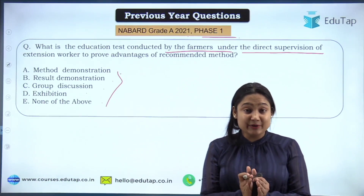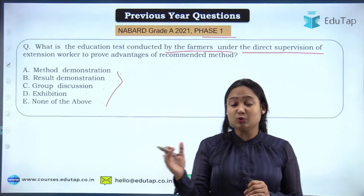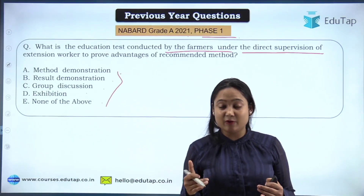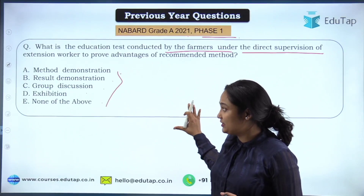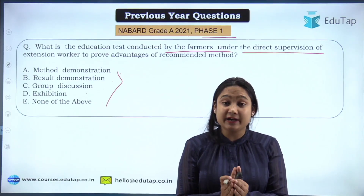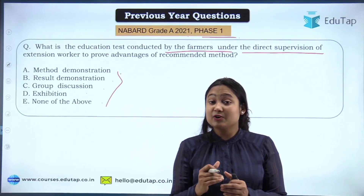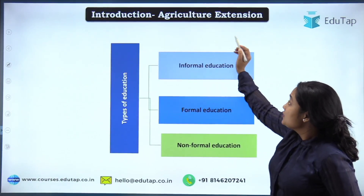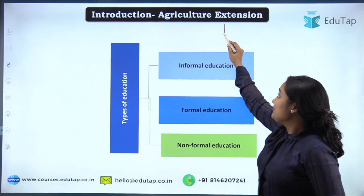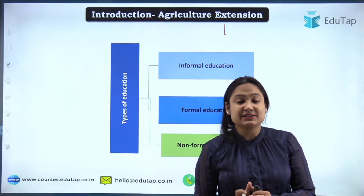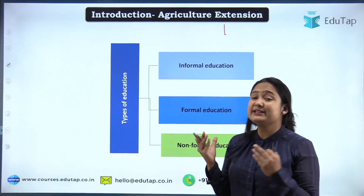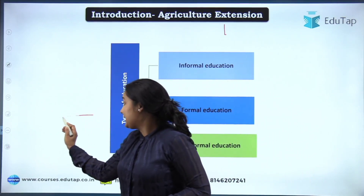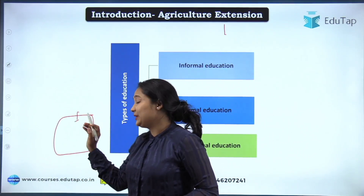This topic will be summarized and targeted specifically to your NABARD examination — there won't be too much outside information. Now let's start our class. First, what is agriculture extension and why do we need it? We know that in India most people are dependent on agriculture, and most farmers are marginal or small farmers — they form the largest group in the farmer community.